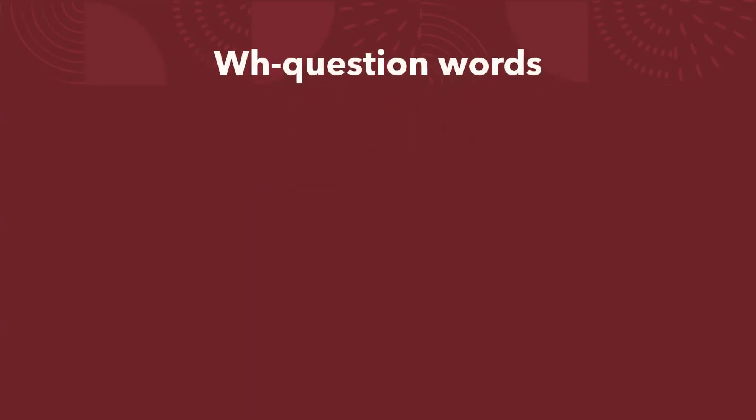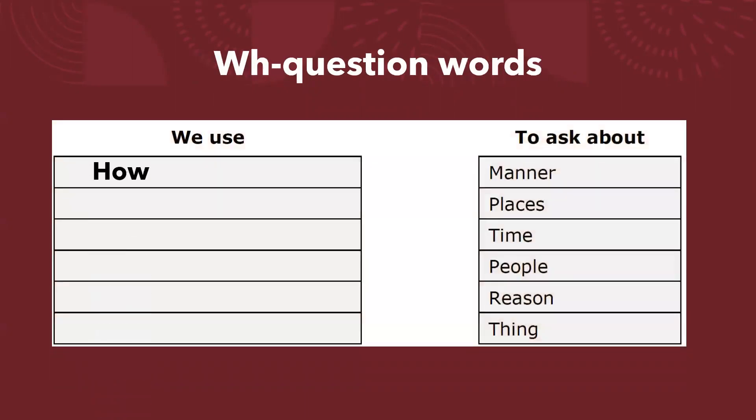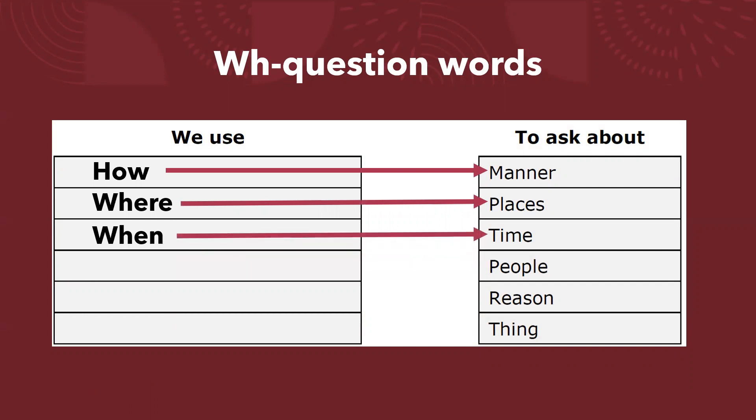And now we have WH question words and we use how to ask about manner. We use where to ask about places. We use when to ask about time. Who? To ask about people. Why? To ask about reason. And what? To ask about things.